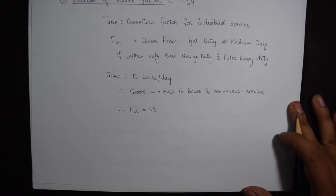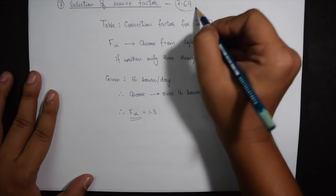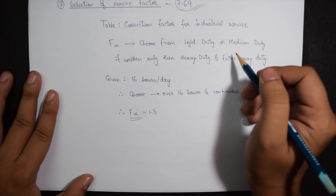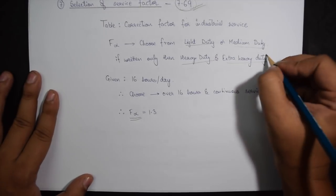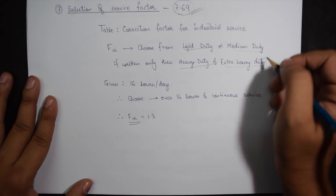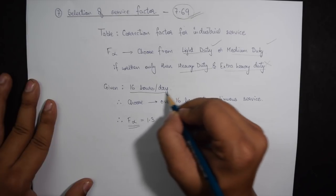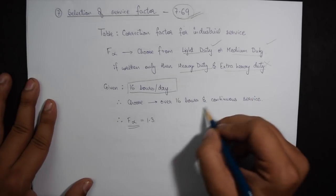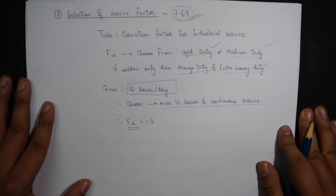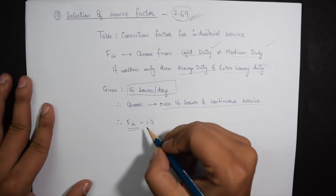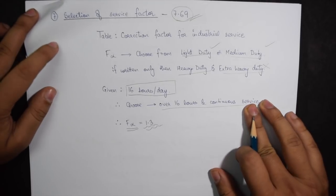Step 7 is selection of service factor which is F alpha. Now under the table correction factor for industrial service we have four different types of services: light duty, medium duty, heavy duty and extra heavy duty. Until or unless it is given in the question please do not choose heavy duty or extra heavy duty. Go only with light duty and medium duty service. Now our question states that the machine is on for 16 hours per day. So we will be choosing the column which says over 16 hours in continuous service. For the type of driving unit I am choosing AC motors and DC motor type. So our value of F alpha is coming to be 1.3. 1.4 could also be used if I choose the other application over here.